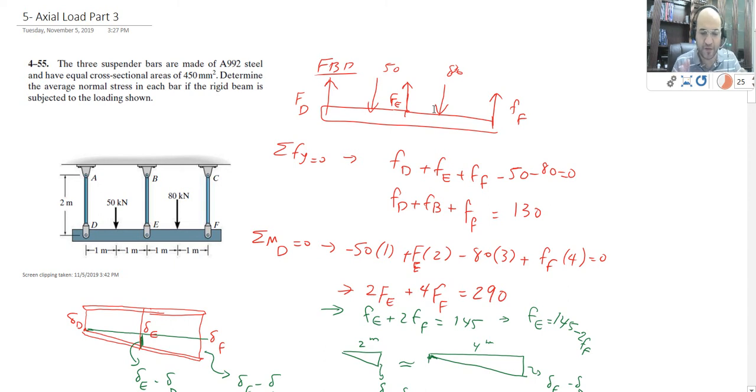Okay, we work on a couple of examples related to statically indeterminate beams. In this case, I have one horizontal beam that crosses from D, E, F, and then we apply the force of 50 kN and 80 kN.